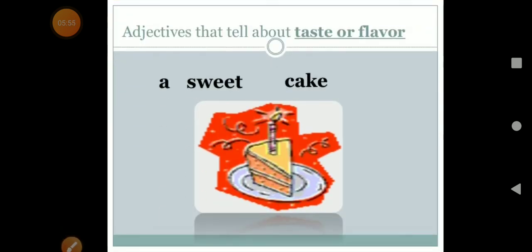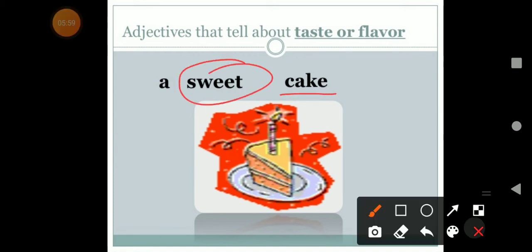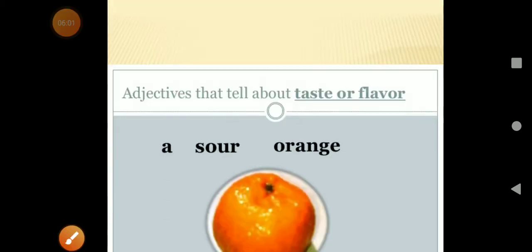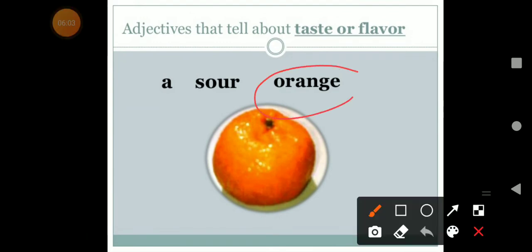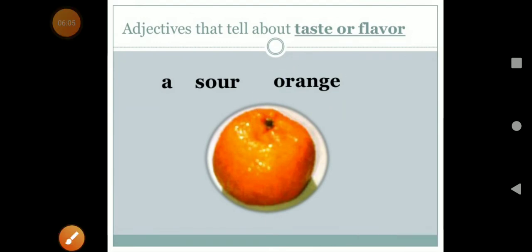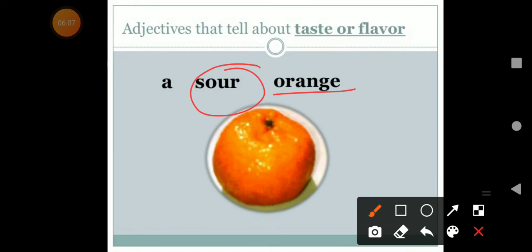It will also tell us about the taste or the flavor. Like, cake is a noun and sweet is the adjective. Orange is a noun and sour is an adjective.